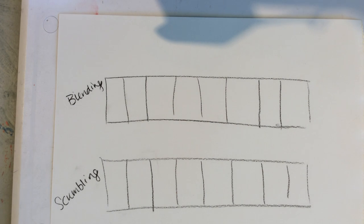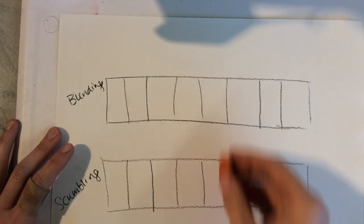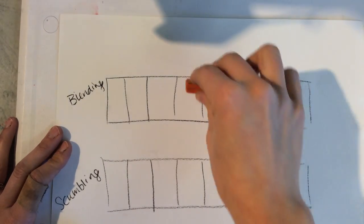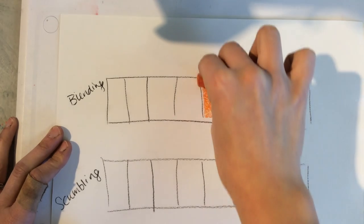Now what we're about to do is create a scale out of our pastel using two different techniques. The first one is blending. Blending you should be used to because you can use your blending stick or you can use your finger to blend.